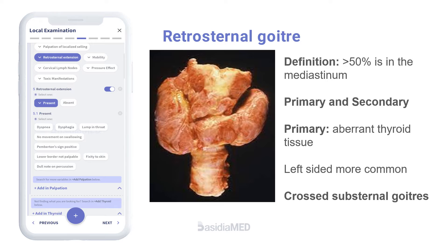Extension of a thyroid swelling into the mediastinum is mostly seen in the fifth or sixth decade. Retrosternal goiters are more likely to be left-sided, and very rarely a left-sided cervical goiter descends into the right side of the chest, which is called a cross-substernal goiter.